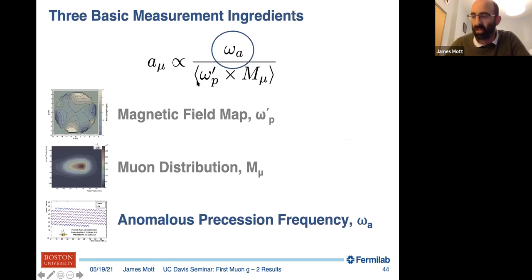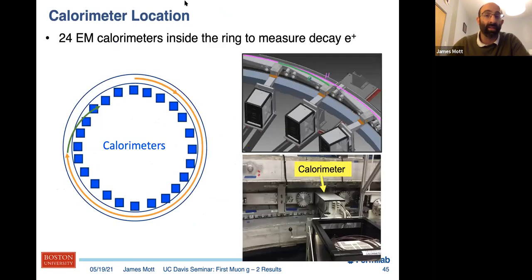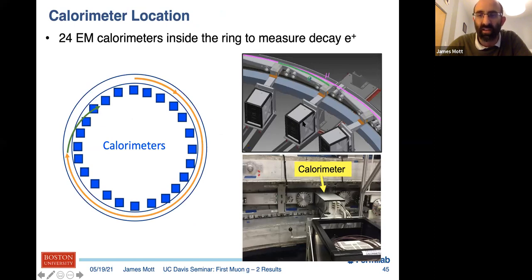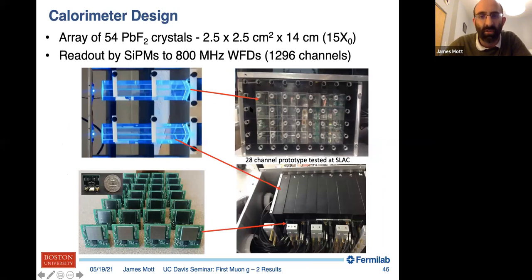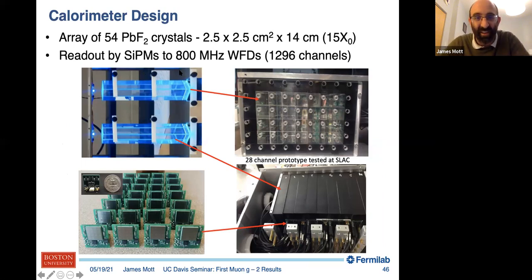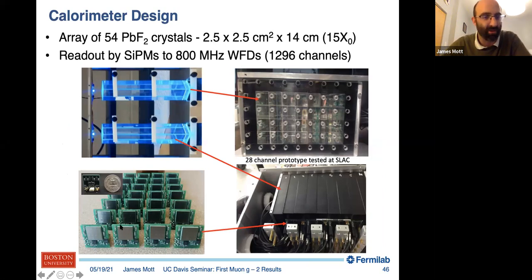Moving on to the anomalous precession frequency measurement — the numerator omega_a. We measure these with 24 calorimeters on the inside of the ring. They are arrays of 54 lead fluoride crystals, roughly one inch by one inch by six inches, read out by silicon photomultipliers on the back. We digitize at 800 MHz across about 1,300 channels and do pulse fitting offline.